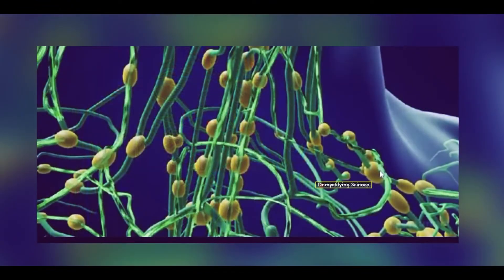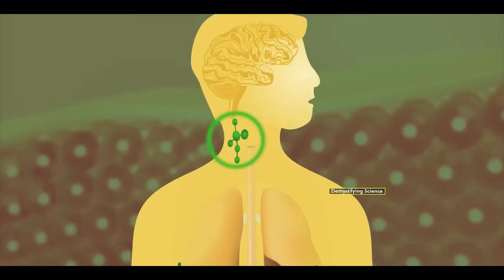If adult roundworms multiply and block these lymph nodes, they prevent the removal of waste, leading to the accumulation of waste in the lymph nodes.